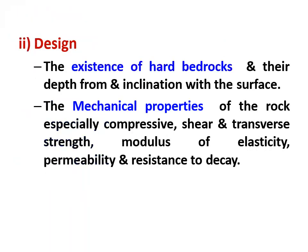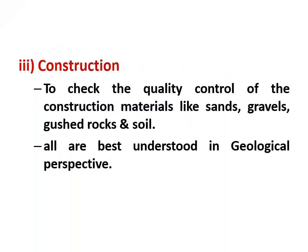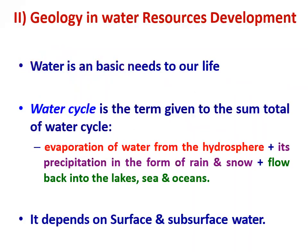While planning, we need to understand topographic maps, hydrological maps and geological maps. Design is very important — we need to study mechanical properties of rocks such as compression strength, shear strength, transverse strength, modulus of elasticity, permeability and resistance to construction. We also need to check the quality of construction materials like sand, gravels, rocks and soil. For water resource development, the water cycle — evaporation, precipitation as rain and snow, and flow back to lakes, seas and oceans — is taken into consideration.